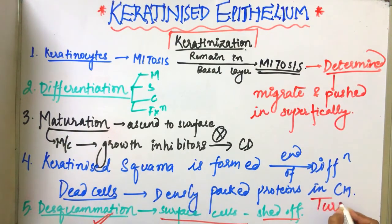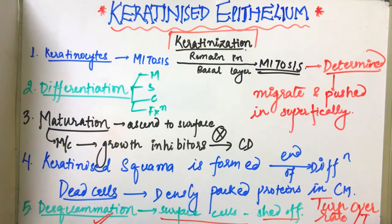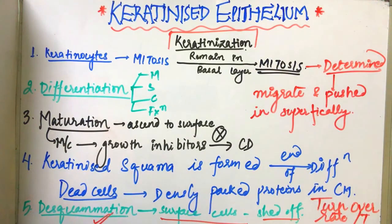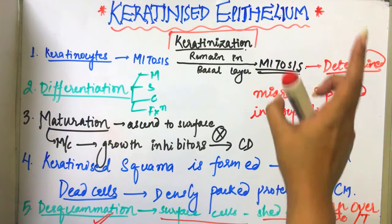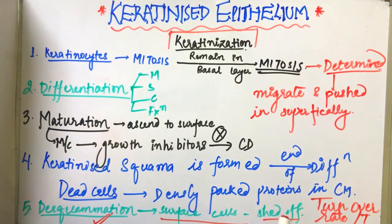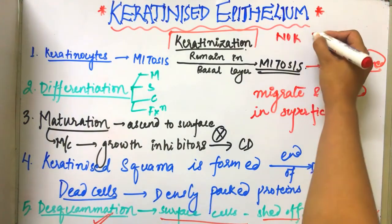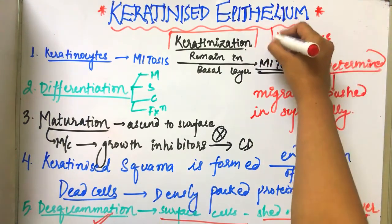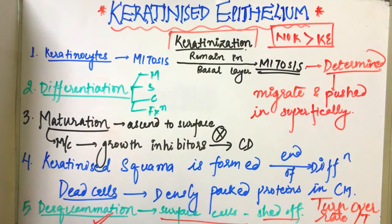Here comes the role of the turnover rate. Turnover time, or turnover rate, is the time taken for a cell to divide and pass through the entire epithelium. The turnover rate of the keratinized epithelium is less than that of the non-keratinized epithelium — the non-keratinized epithelium has a higher turnover rate compared to the keratinized epithelium.